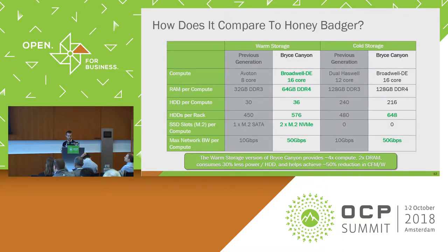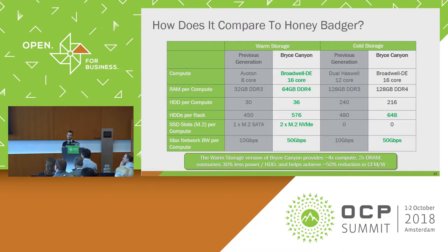How does it compare to our previous Honey Badger chassis? We improved a lot of aspects — not only system performance but also about four times the amount of compute per drive, increased DRAM, less power consumption per drive slot, and about a 50% reduction in CFM per watt for the entire chassis, which is huge for a forced air cooling data center like Facebook.